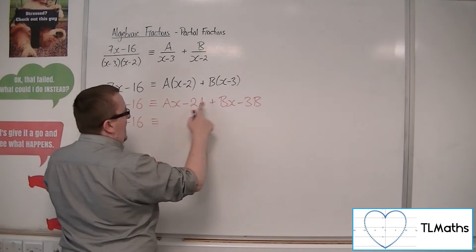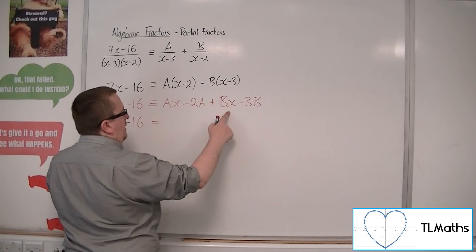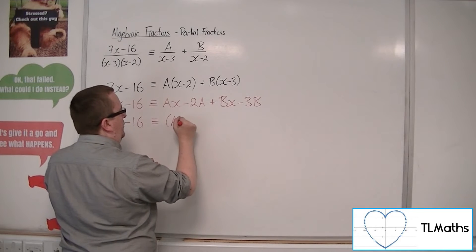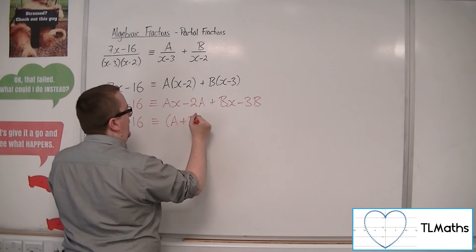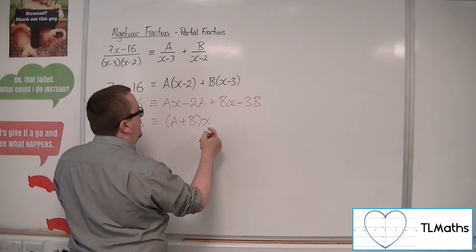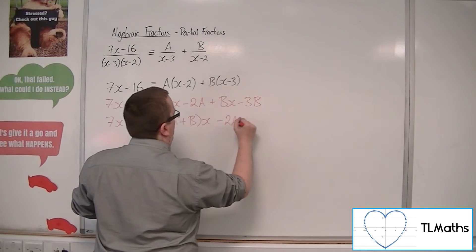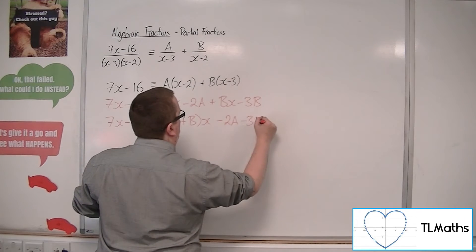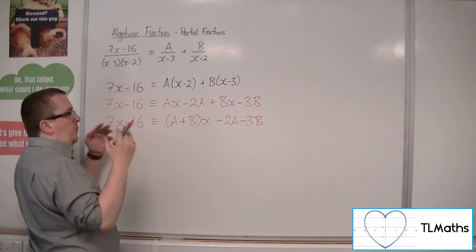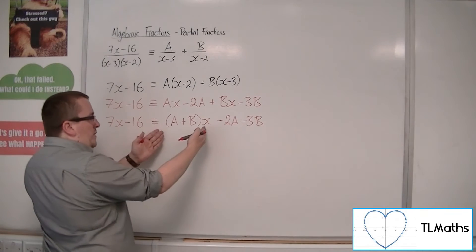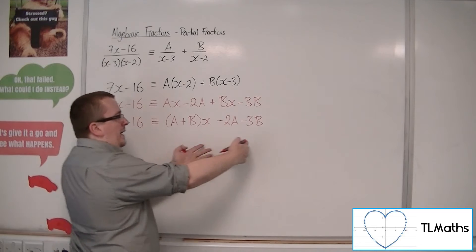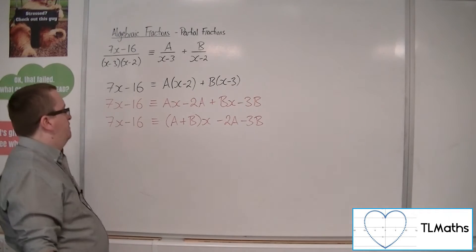I've got ax plus bx, so factoring out the x I can write that as a plus b times x. And I've got minus 2a and minus 3b left over. So I've now got all the x terms together and the constant terms together.